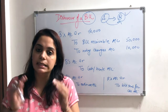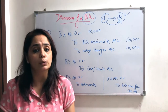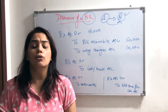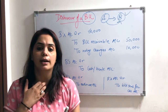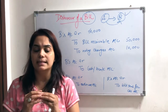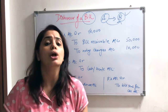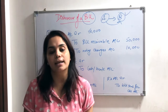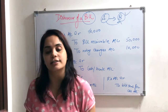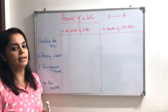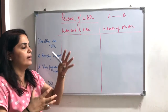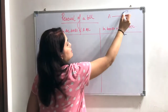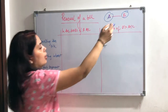In this video I am also going to tell you about the renewal of a bill — what kind of journal entries are passed. Sometimes the drawee tells us that he has no money, so he requests to renew the bill again. So in those cases, what general entries are passed? Let's discuss. If the bill is renewed — meaning the drawee says extend my time as he is unable to pay — then what journal entries do we pass in the books of A and B?